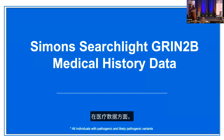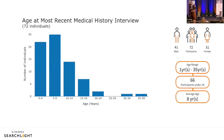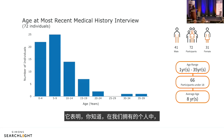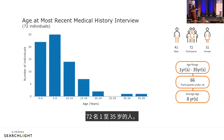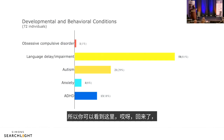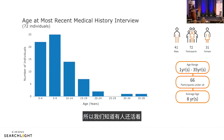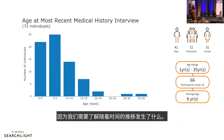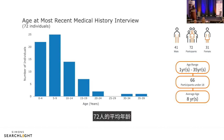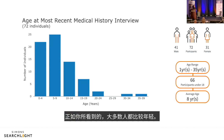Medical data from caregiver reports covers 72 individuals aged 1 to 35 years. Sixty-six are under 18, with the average age being 8 years. The abundance of younger participants reflects a key goal: longitudinal follow-up as individuals age. Understanding what happens over time is critical, so families are urged to stay engaged.